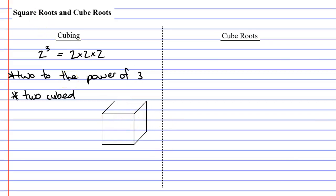When we label a cube, we usually only label three of the sides. We'll label them as 2, 2, and 2. And if we wanted to find the volume of this cube, you would actually multiply the three sides together, which is the same as saying 2 to the power of 3, or 2 cubed.